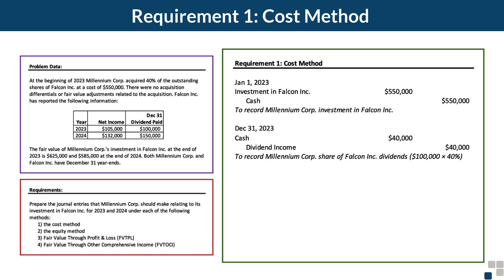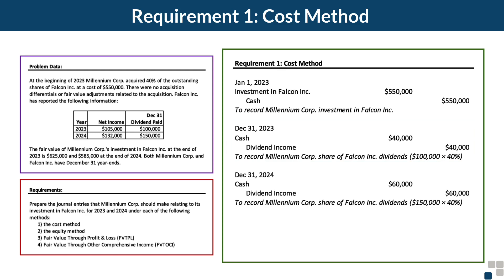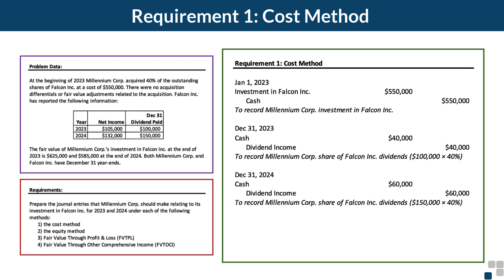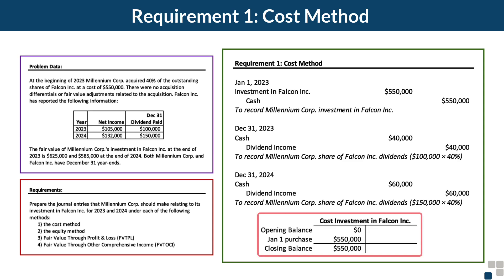The next event falls on December 31st, 2024, where Falcon pays dividends of $150,000, and Millennium's share is 40% of that. So the company debits cash for $60,000 and credits dividend income for $60,000. If we look at the T-account for the cost investment in Falcon, the opening balance is zero, then the purchase of $550,000 on January 1st, 2023, with no other entries flowing through that account. So at December 31st, 2023 and 2024, the closing balance remains $550,000.